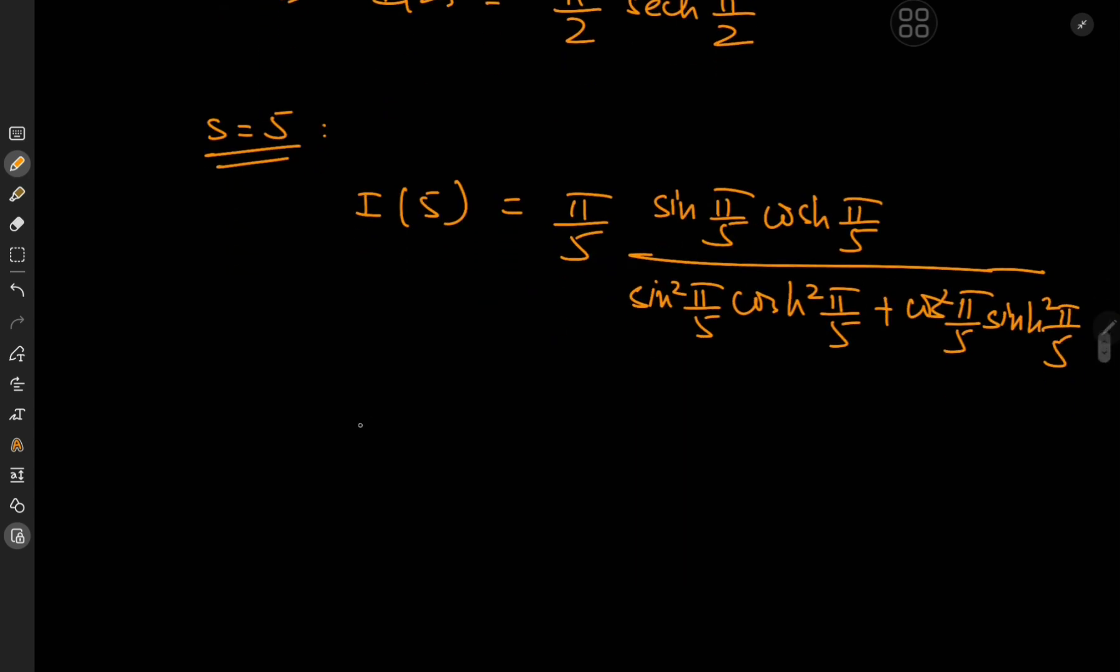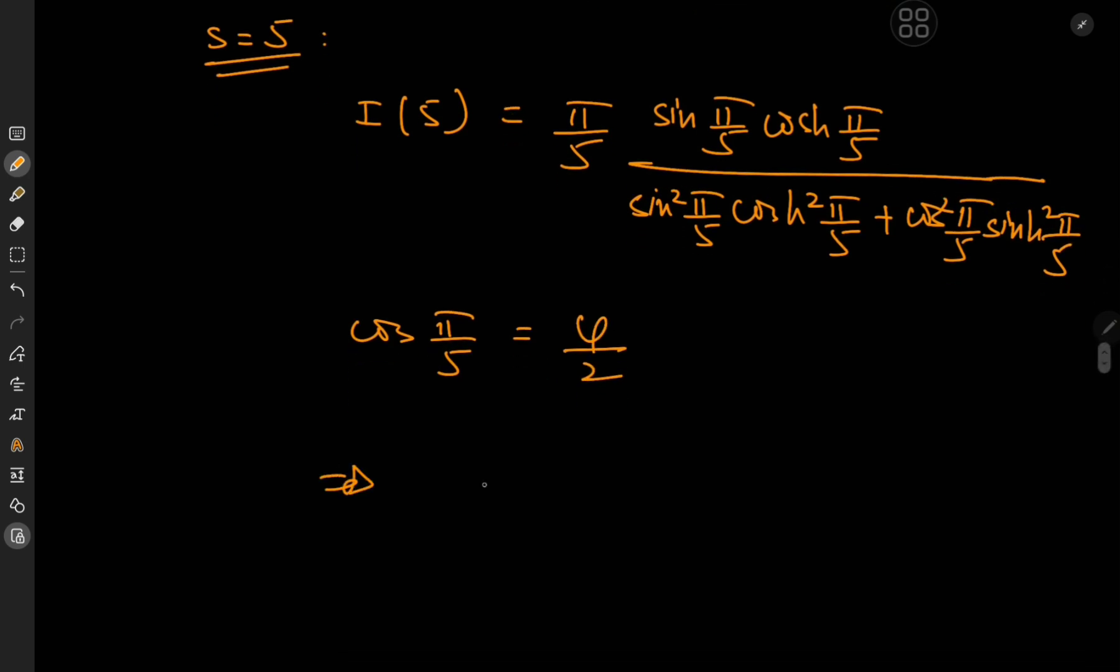Now cosine pi by 5 has a really nice closed form. Cosine pi by 5 equals half the golden ratio phi. So this implies that the sine of pi by 5, which is root 1 minus cosine squared, equals root 4 minus phi squared by 4. That is to say root 3 minus phi by 2. So yeah, that's pretty cool.